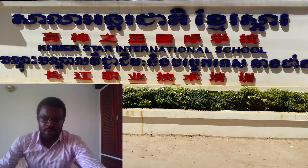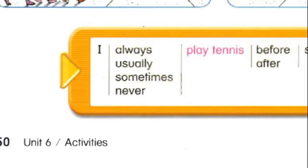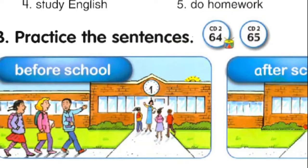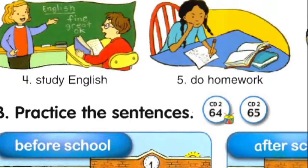Let me show you first. Look at what I was talking about: 'I always play tennis.' You can change the subject — use I, you, he, she, it, we, or they — and use adverbs of frequency like always, usually, sometimes, never. Then choose any verb you wish: play, practice, do, study, or read.